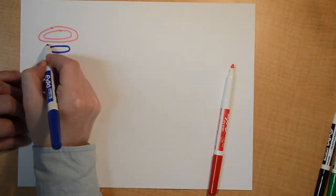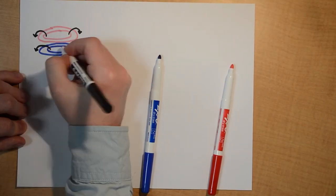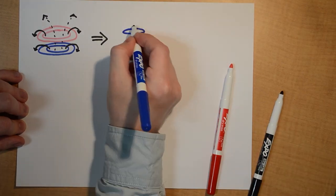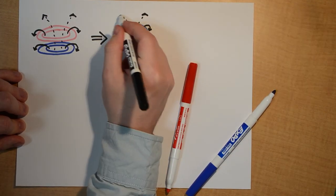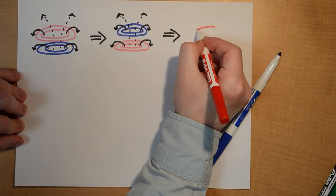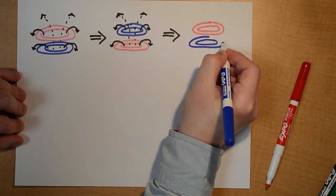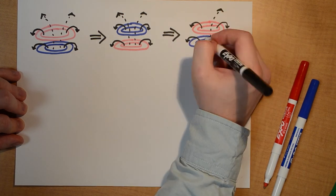One such example is leapfrogging vortex rings, first predicted by Hermann von Helmholtz in the 1800s. Here we have a pair of vortex rings that repeatedly get pulled through each other, creating a leapfrog motion.